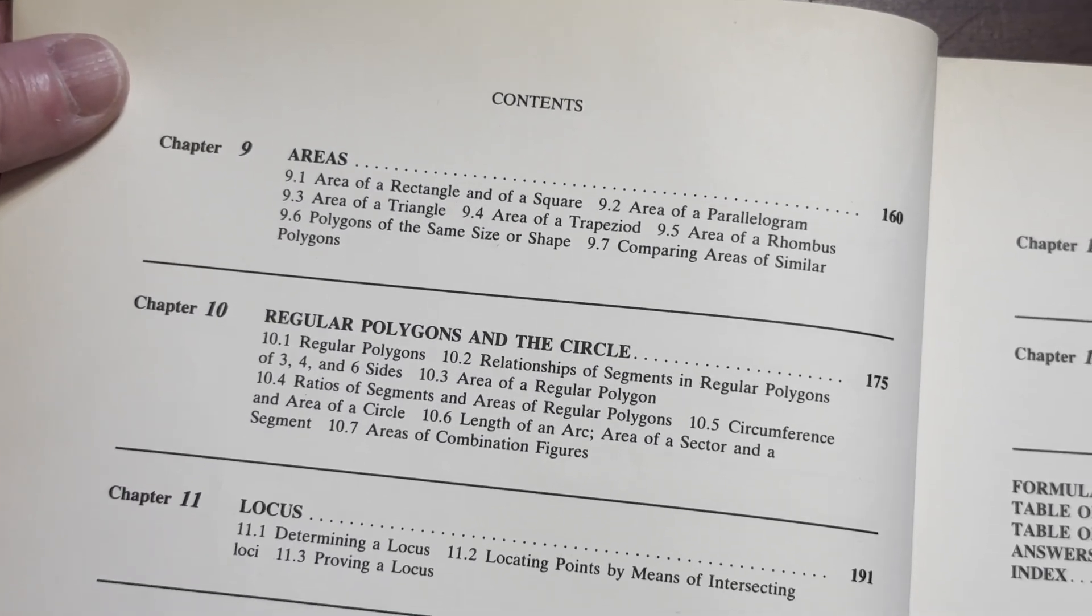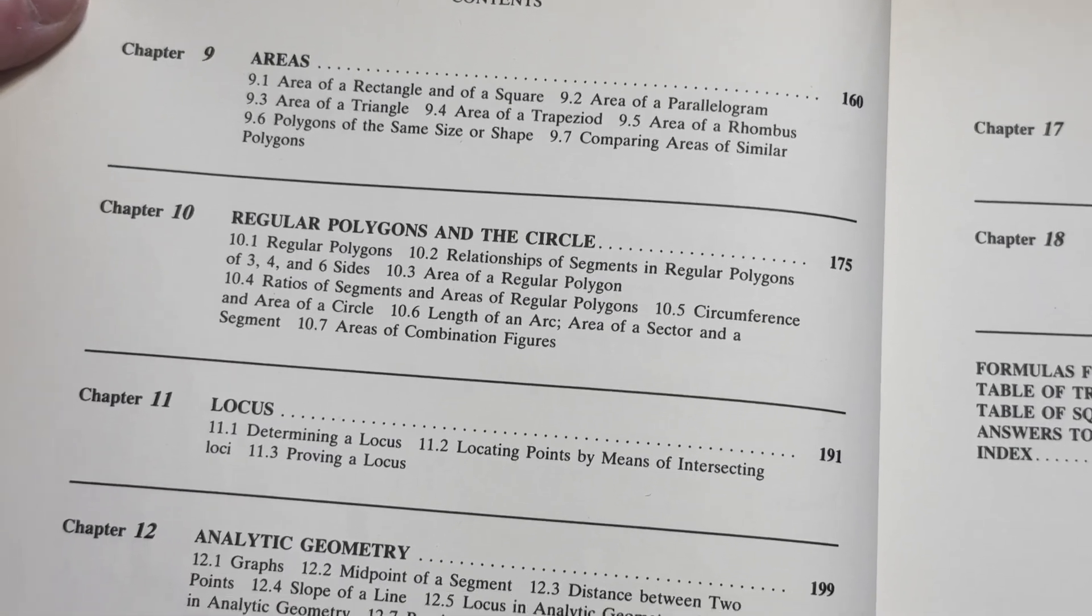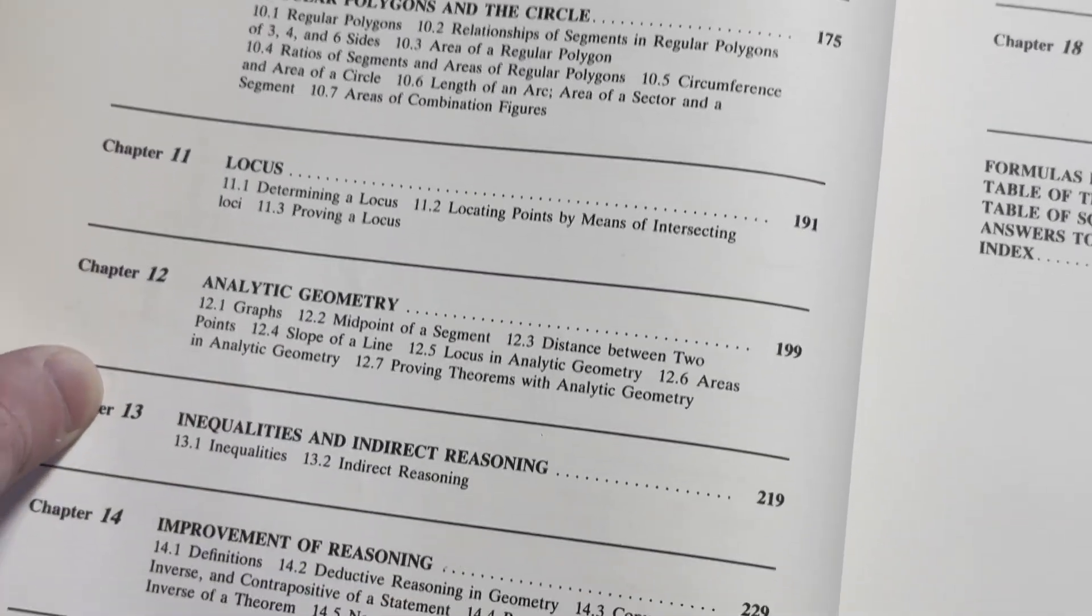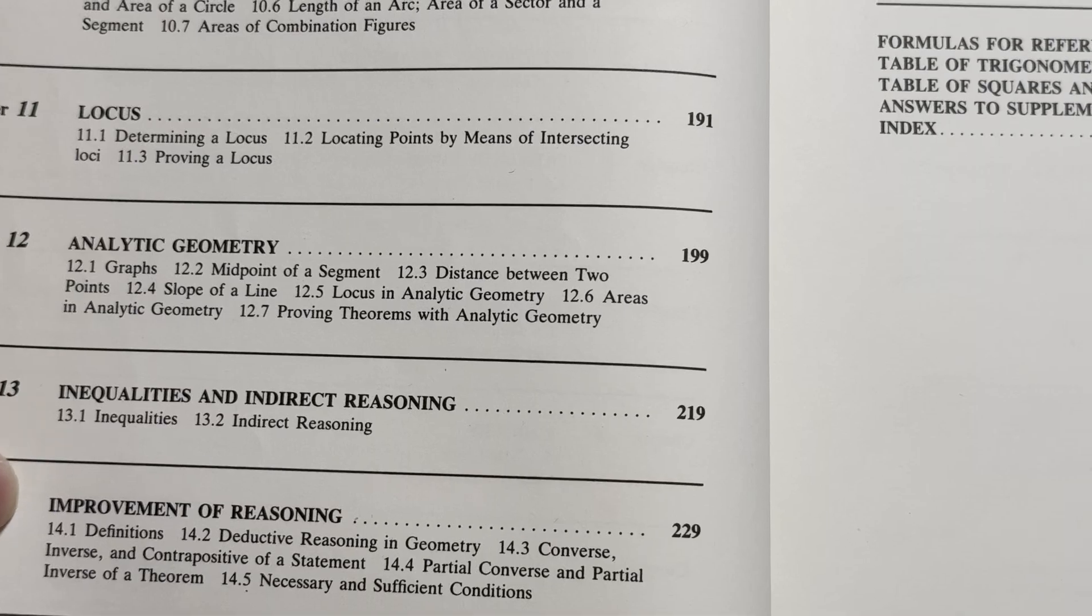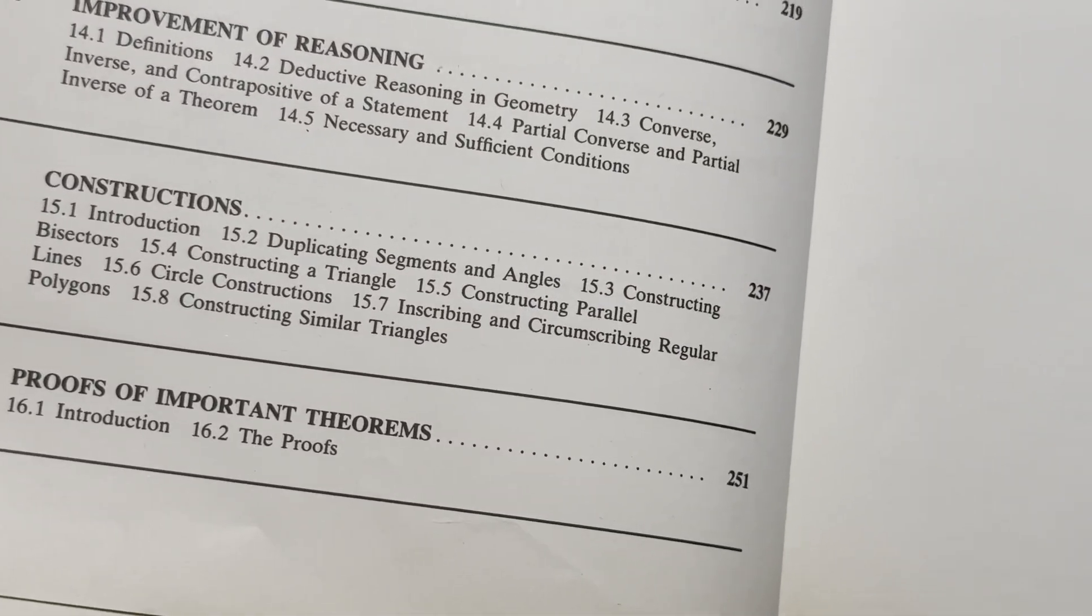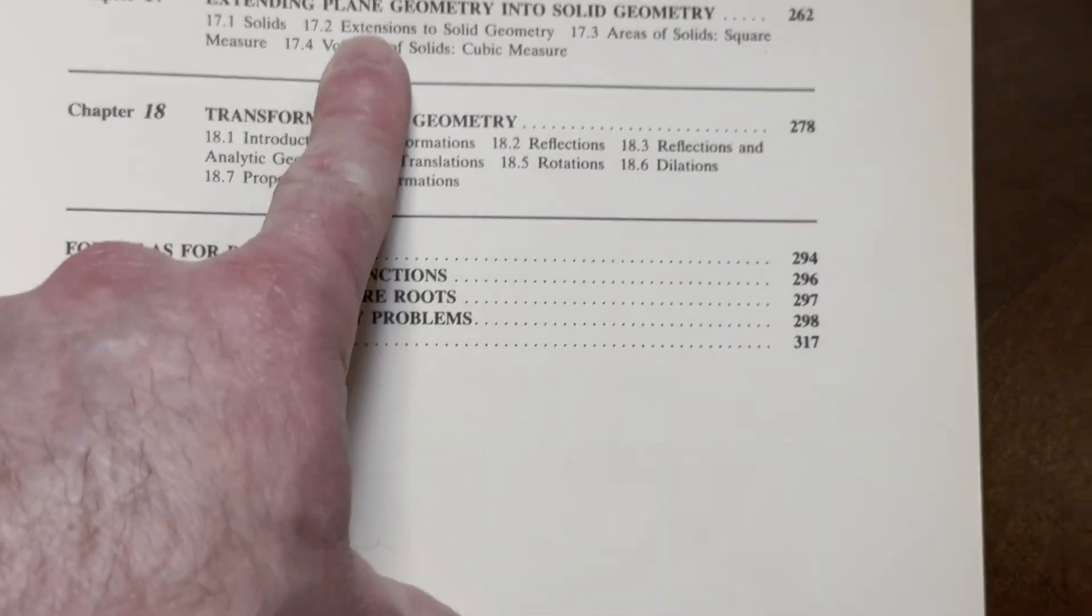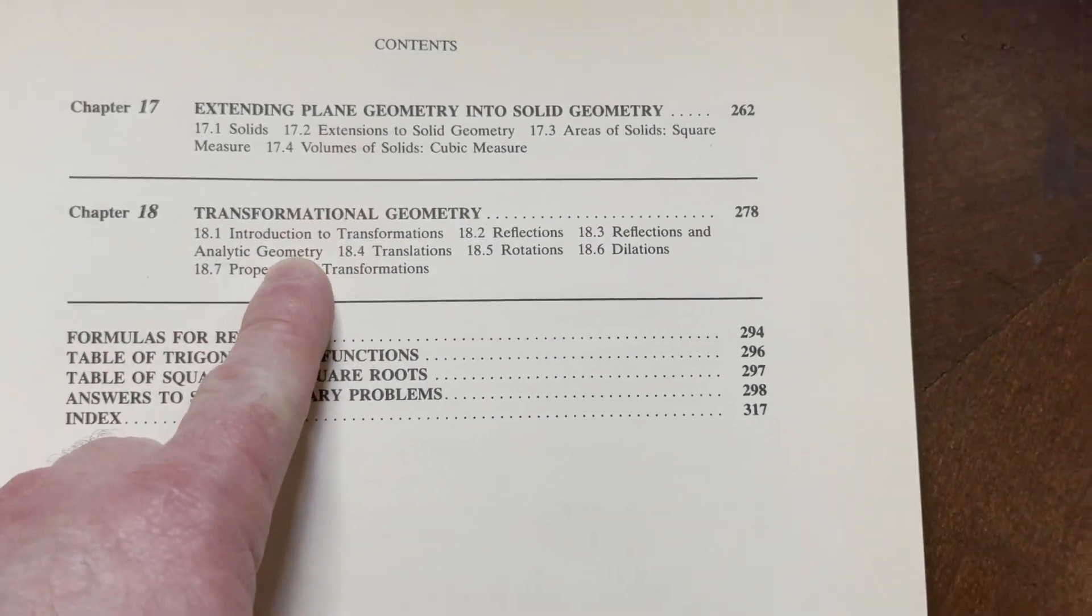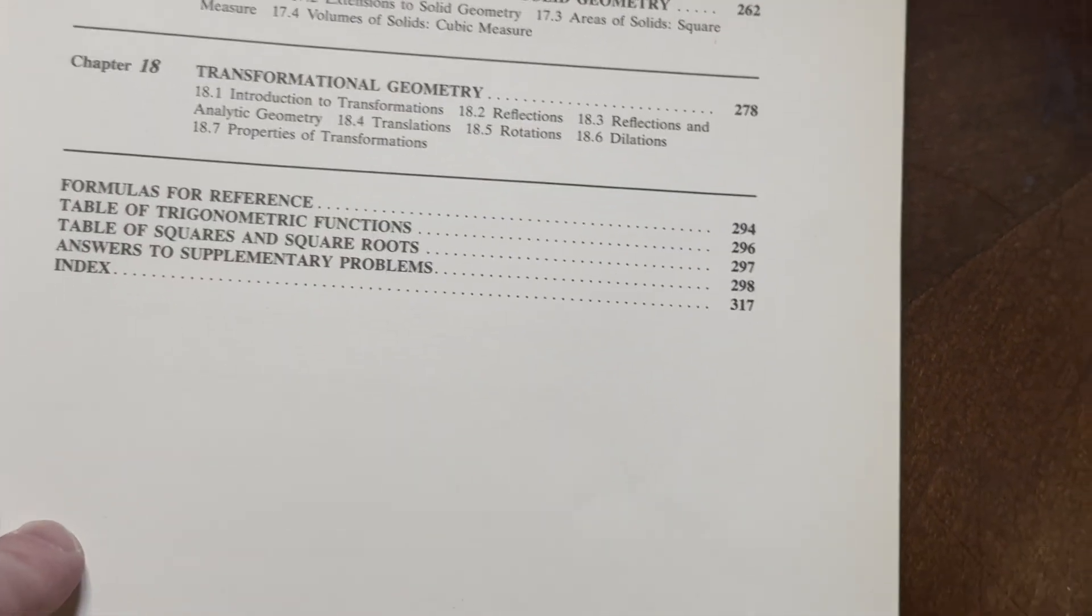And then on the second page, you have areas, regular polygons, and the circle, locus, analytic geometry, inequalities, and indirect reasoning, improvement of reasoning, constructions, proofs of important theorems, extending plane geometry into solid geometry, and transformational geometry.